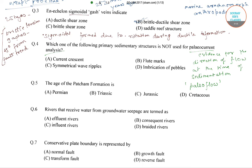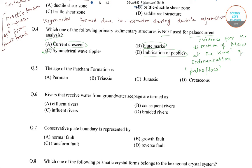The four options are: current crescent, symmetrical wave ripples, flute mark, and imbrication of pebbles. Among these, current crescent, flute marks, and imbrication of pebbles are primary sedimentary structures used for paleocurrent analysis. So the correct answer is option C — symmetrical wave ripples are not used in paleocurrent analysis.